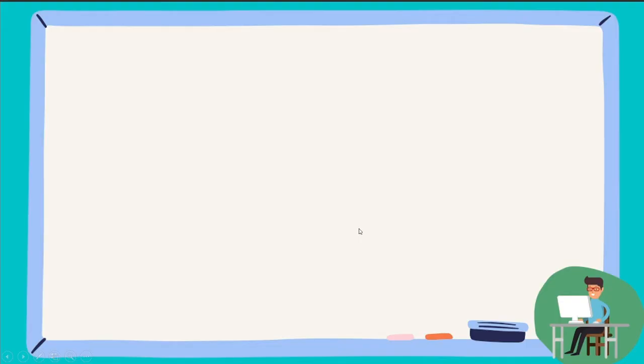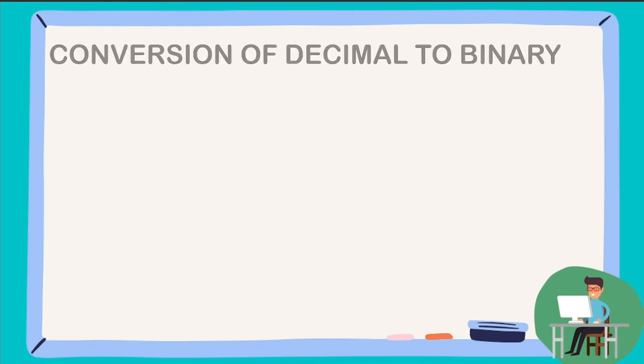We will teach you how to convert numbers into binary form. Today, I'm going to teach you how to convert a decimal to binary. For example, you're going to convert the number 65 into binary.